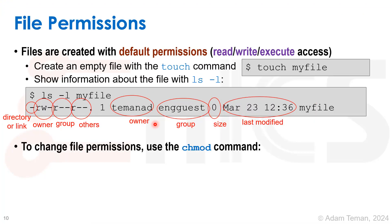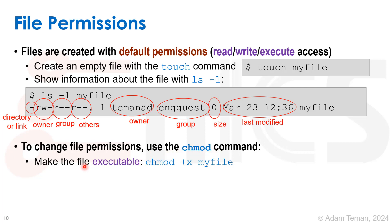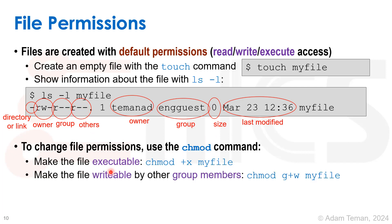How can I change file permissions? With the program chmod — change mode. There are lots of options and you can look at the man pages for examples. For instance, to make a file executable, I do 'chmod +x myfile', which will add execute permission for the owner and the group. I can make the file writable only by group members by doing 'chmod g+w', which adds write permission only in the group area.